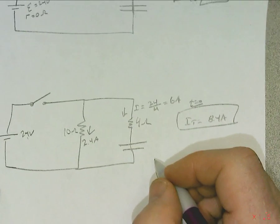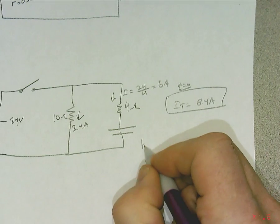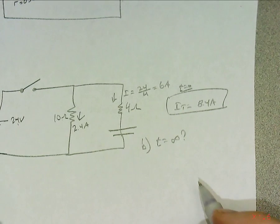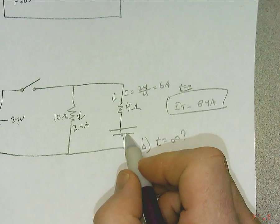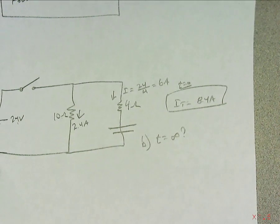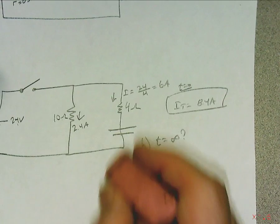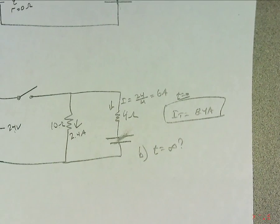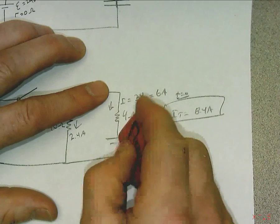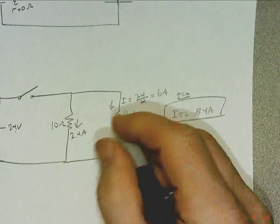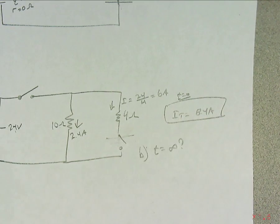Now, part B. In B, we're asking for T equals infinity. Well, when T equals infinity, this capacitor looks like an open circuit. So what I like to say is you could take that capacitor and rip it out of the circuit and throw it away. So it erases this whole thing. In other words, it's open. It's almost like putting a switch here and you open the switch.